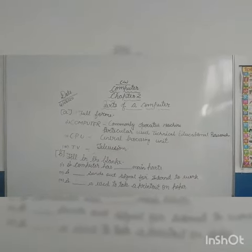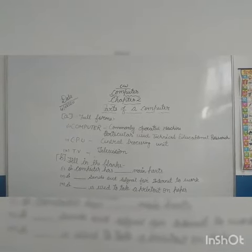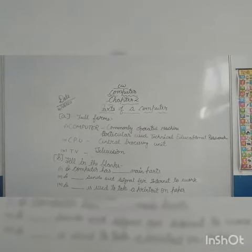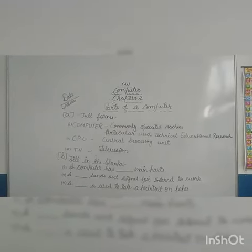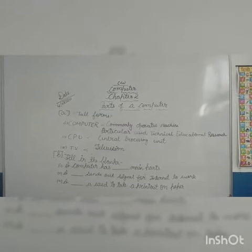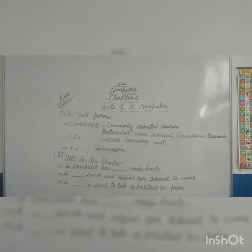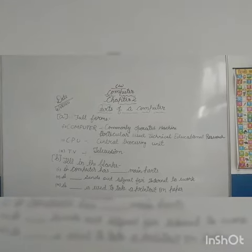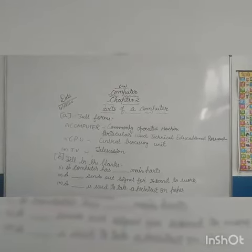Then CPU. CPU is a brain of computer. So the full form of CPU is central processing unit. Next TV. The full form of TV is television.